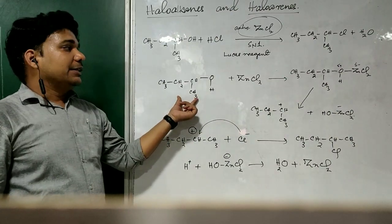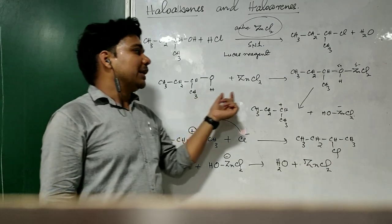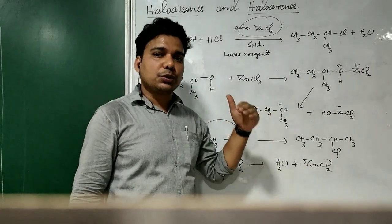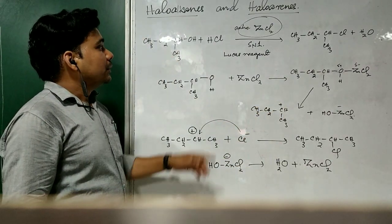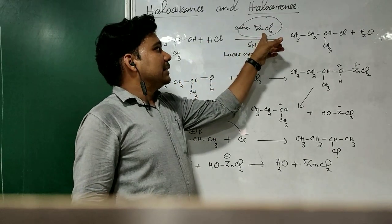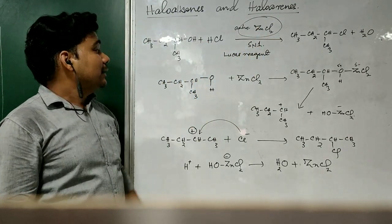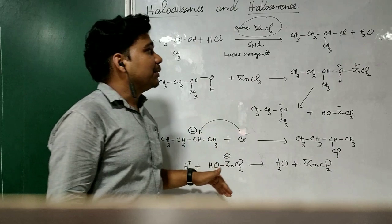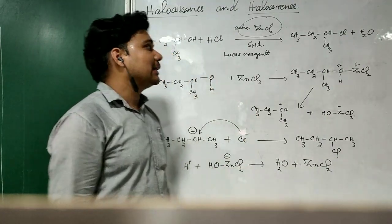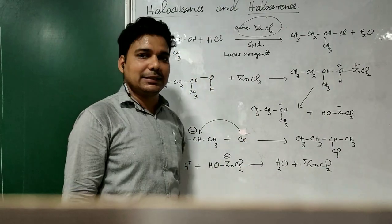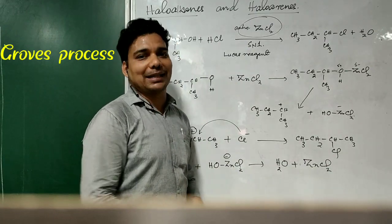Here I have taken a secondary alcohol, but I can also use primary alcohol. If I use primary alcohol, then the mechanism would be through an SN2 pathway. The mixture of HCl plus anhydrous ZnCl2 is called the Lucas reagent, and this method of preparation of primary alkyl chloride and secondary alkyl chloride by using this Lucas reagent is called the Lucas method.